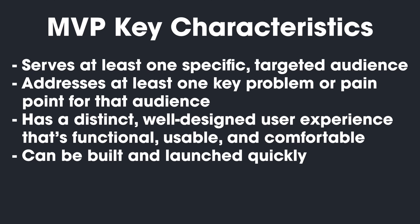Otherwise, there's no point in anyone caring about your product at all. The whole point of an MVP is to conduct an experiment — you're essentially doing usability testing to see if your hypothesis is accurate. To test its accuracy, there are a few key parameters your MVP needs to satisfy: you want to see if it serves at least one specific targeted audience, addresses at least one key problem or pain point for that audience, has a distinct well-designed user experience that's functional, usable, and comfortable, and can be built and launched quickly. Because even if one of these four key characteristics is off or missing altogether, your test results are going to be skewed.